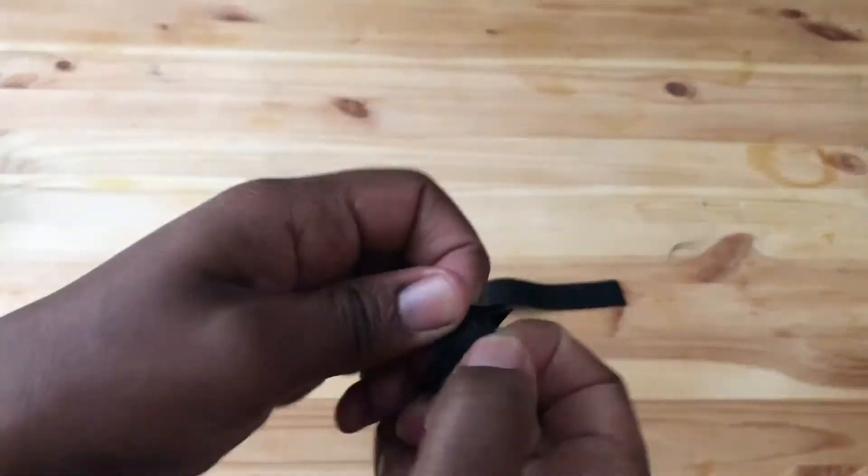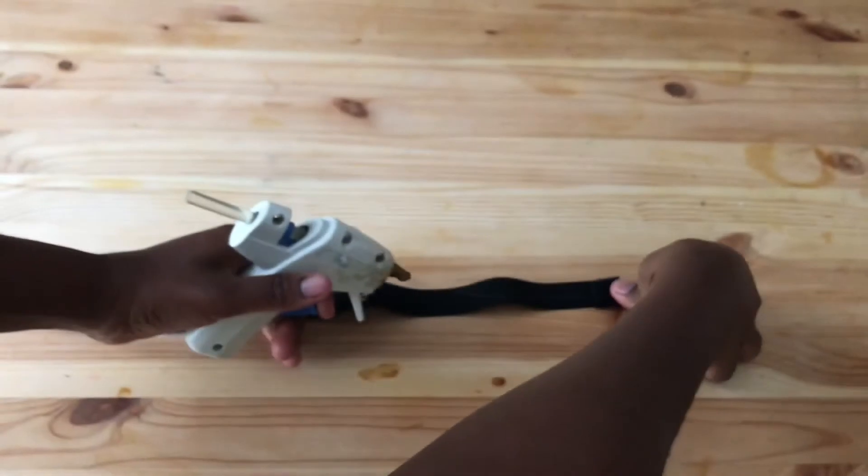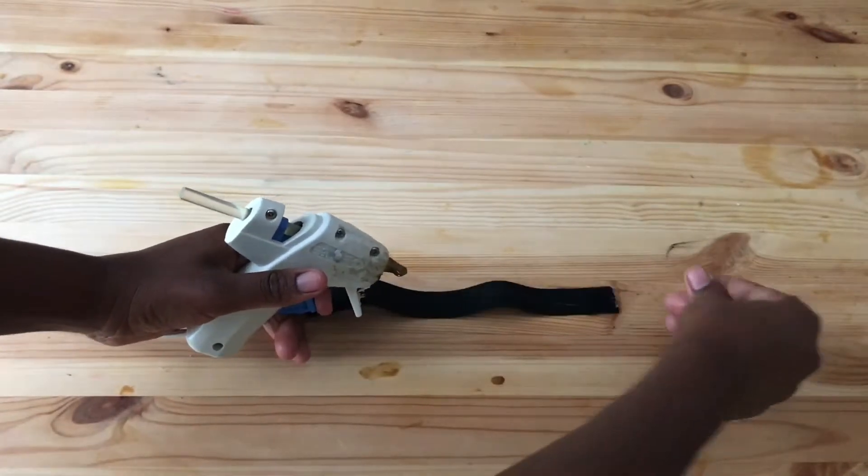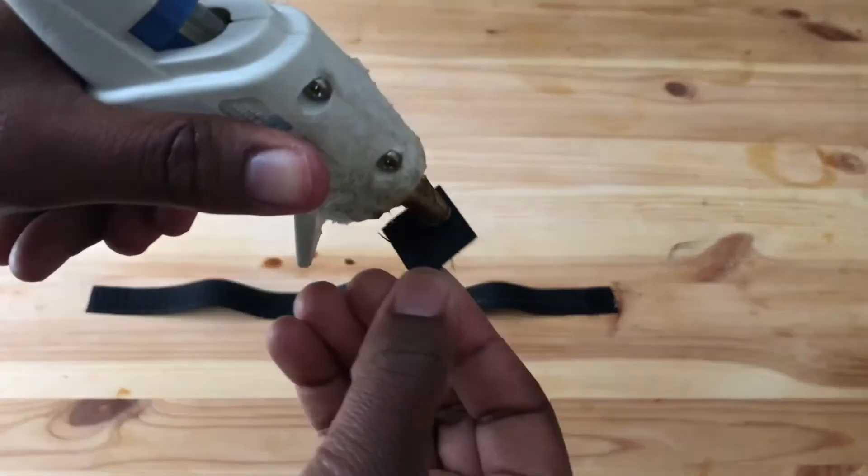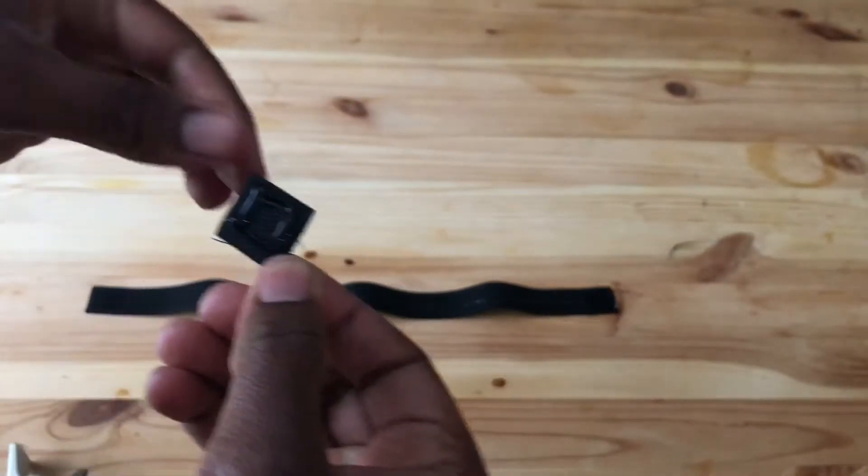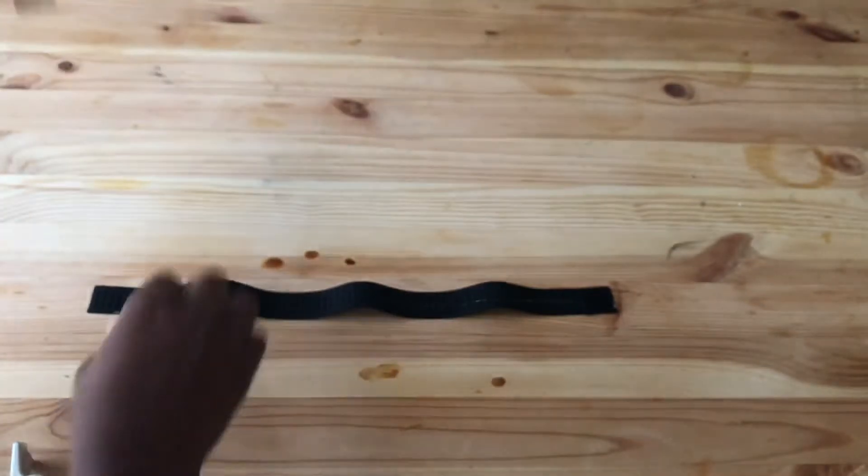So we take our choker elastic piece and then we take the velcro and we do the same thing that we did for the bracelet. We put the velcro on both sides of the fabric, or both sides of the elastic.